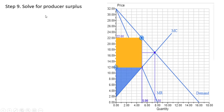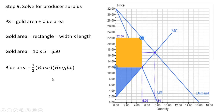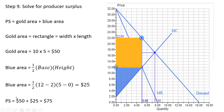Producer surplus under monopoly equals two areas: a gold rectangle and a blue triangle. The rectangle has width 22 minus 12 equals 10 and length 5, giving area $50. The triangle uses one-half base times height: 12 minus 2 equals 10 is one dimension, and 5 is the other, giving $25. Adding the two areas together, producer surplus under monopoly is $75.